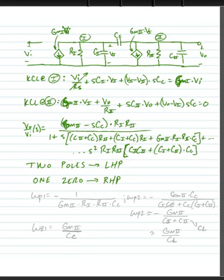If we were to do some analysis we could find that our two poles were omega p1 is equal to minus one over gm2 times r1 times r2 times cc. Omega p2 is equal to minus gm2 times cc divided by c1 c2 plus cc times c1 plus c2.